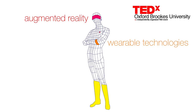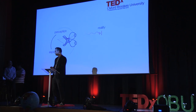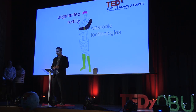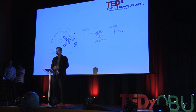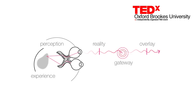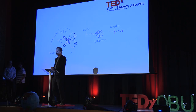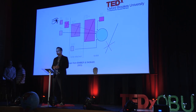We have many different types of memories. If we want to hack into this, we have to hack into perception. And we can do so with augmented reality and wearable technologies. We can put gateway devices in between the real world and what we perceive, to help us build different types of experience.